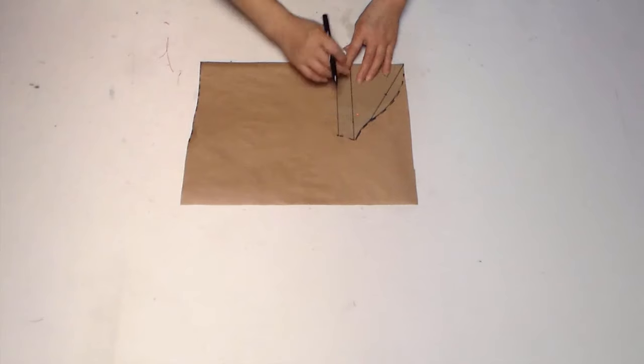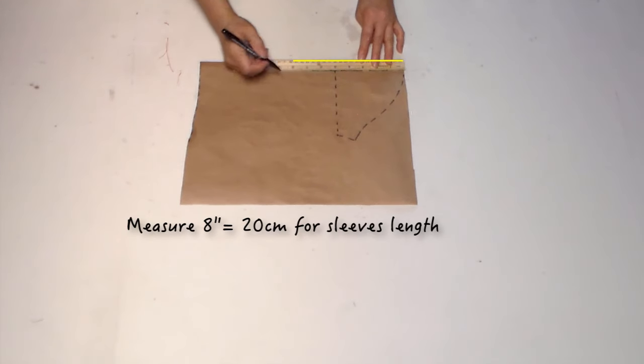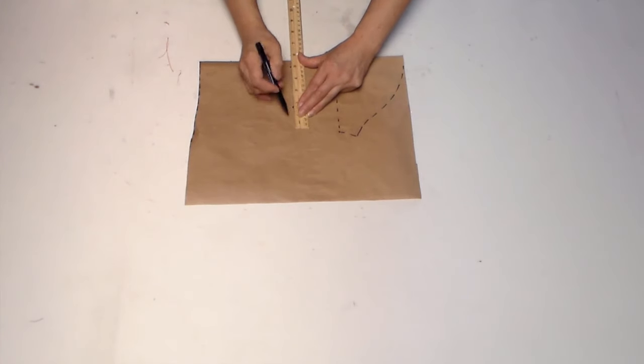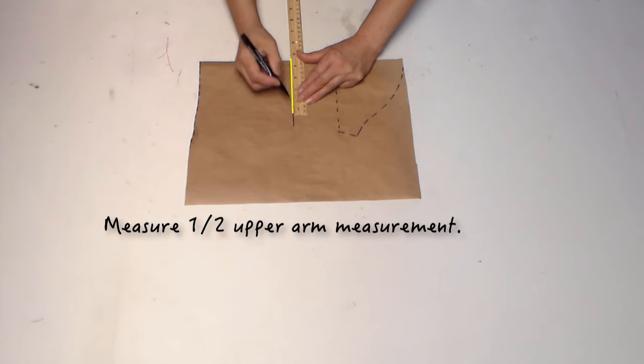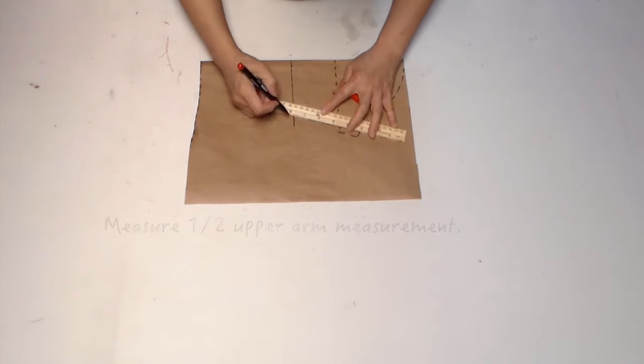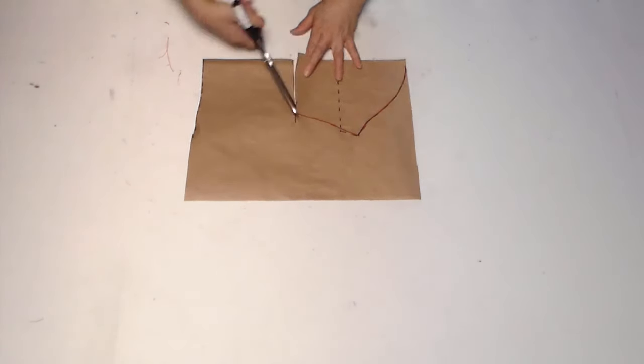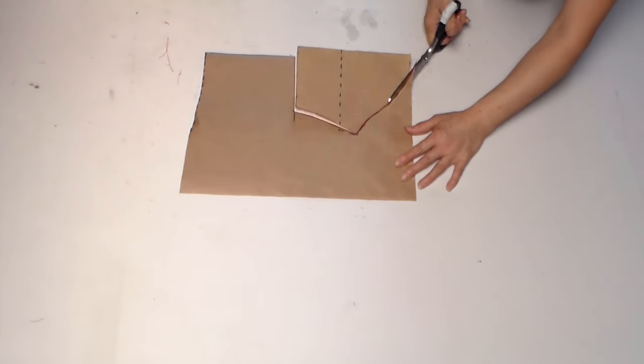I like to make the sleeves a little bit longer than basic pattern. Now we copy the pattern on the fresh paper. Measure 80 inches for sleeve length. Measure half of the upper arm. Make a point and connect the bottom point to the top. This is our new sleeve pattern.